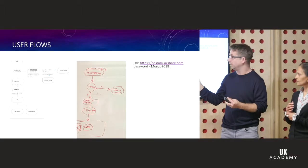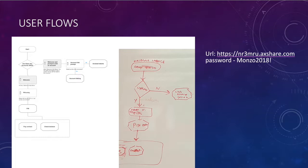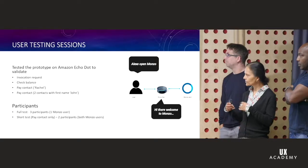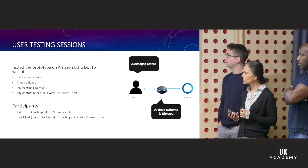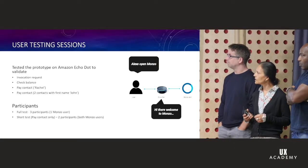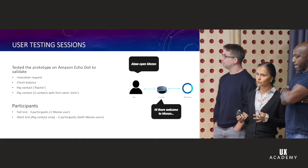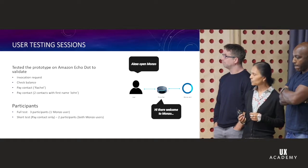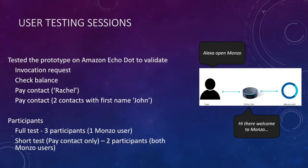We're into user flows then. Here's an example — this is just a sample of one of them. We've also got a load that we've done, including PIN and pay contact. Those flows in Storyline, we iterated those, and we had a final prototype that we uploaded onto the Echo Dot. We tested the invocation request — checked balance and pay contacts — two types.